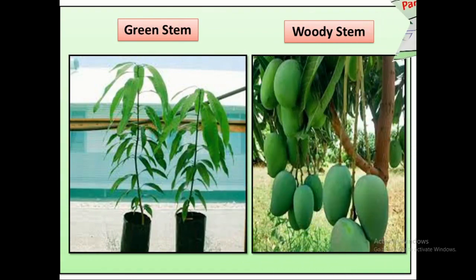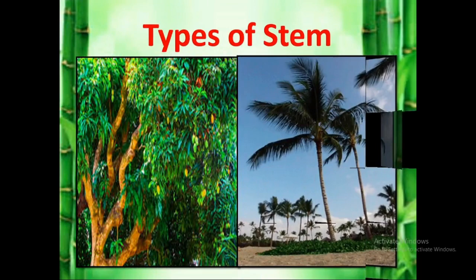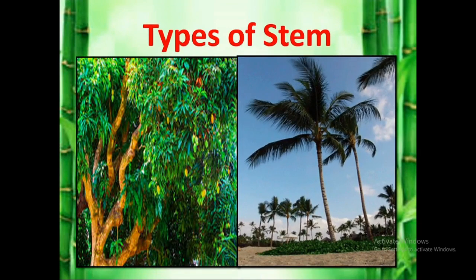Let us learn about stem first. There are many different types of stems. When plants are in a younger state, the stem color is green. When the plant grows, the stem becomes woody and brown in color. In this picture we can see both are mango plants — in the first picture the stem is green, and in the second picture the stem is woody and brown in color.